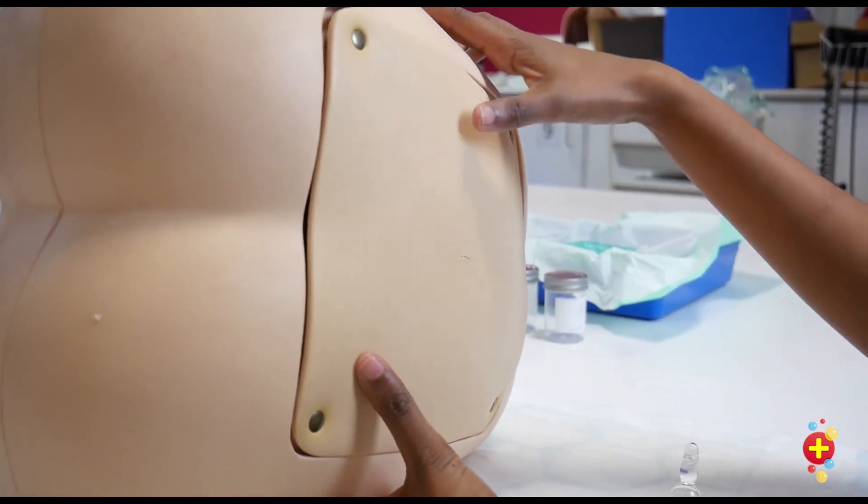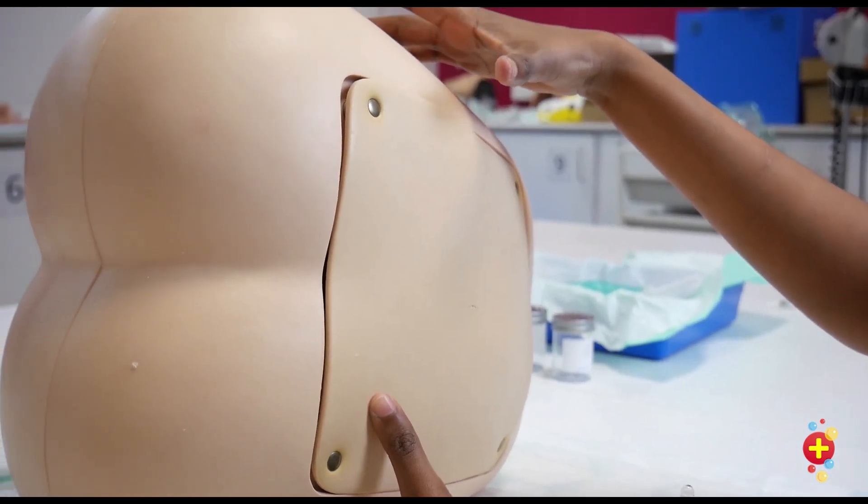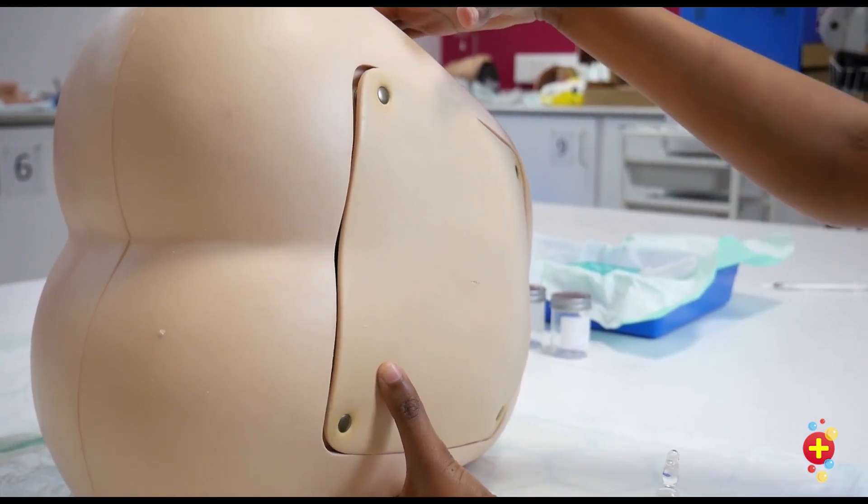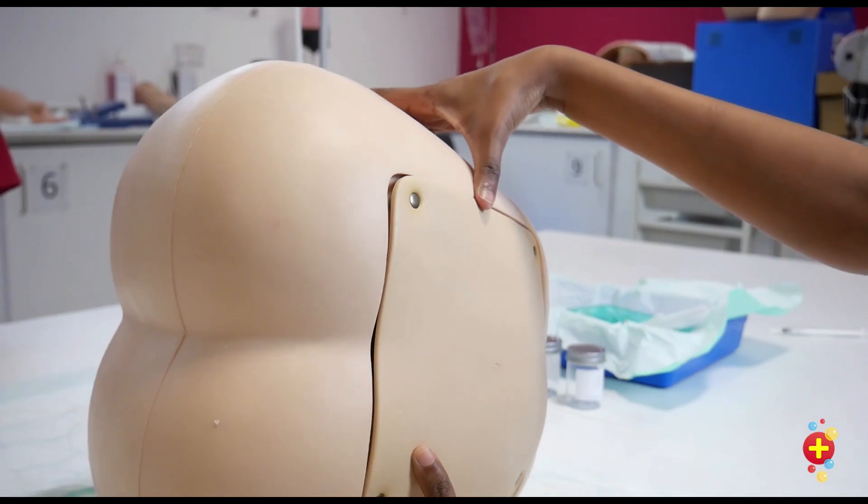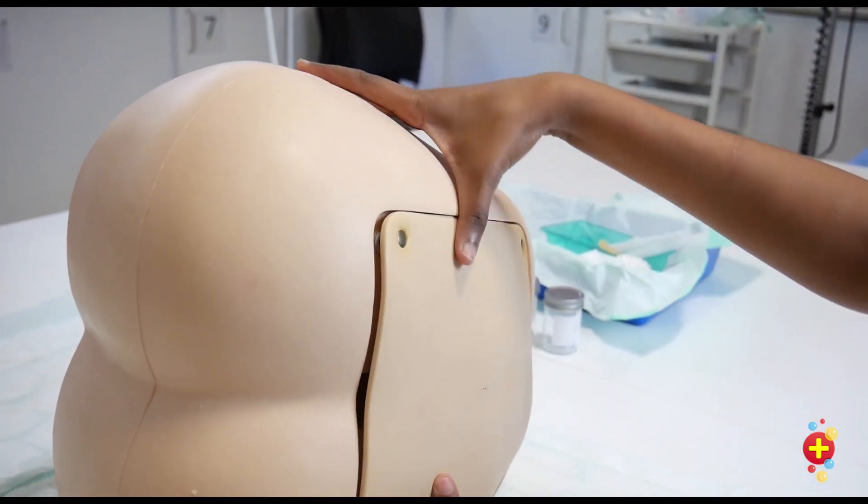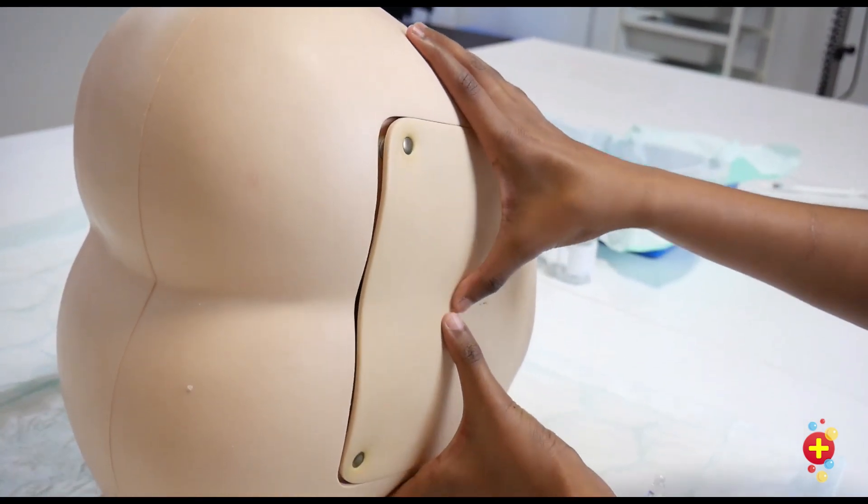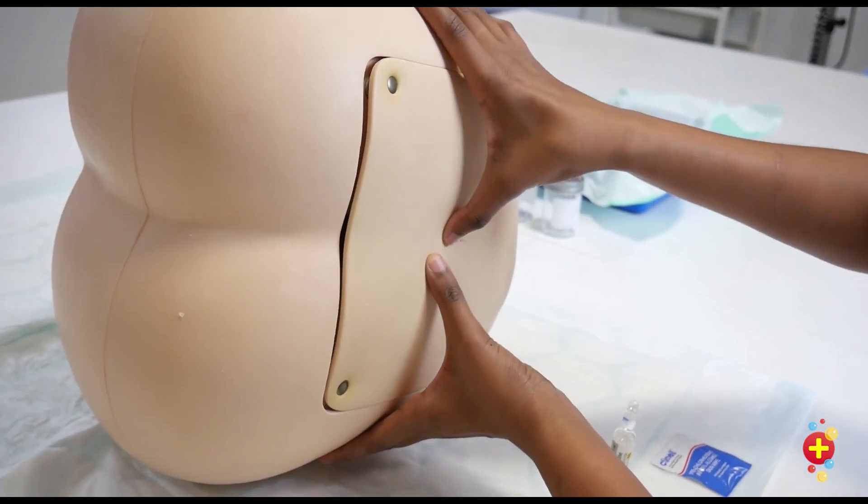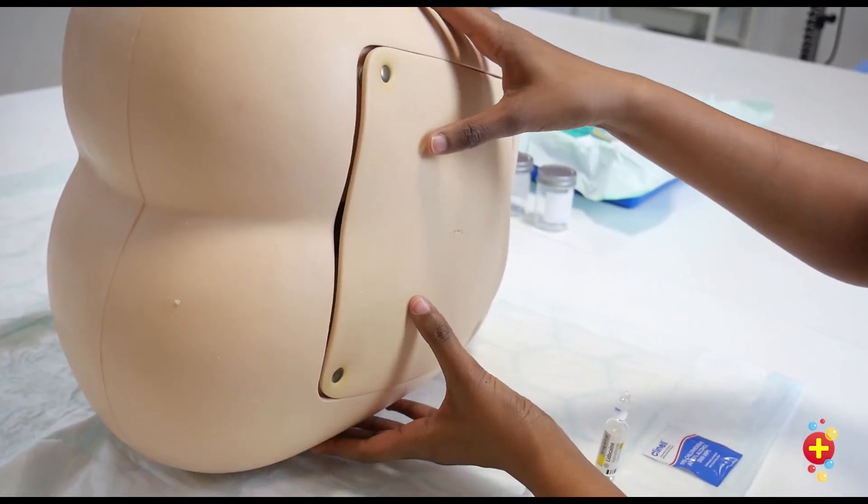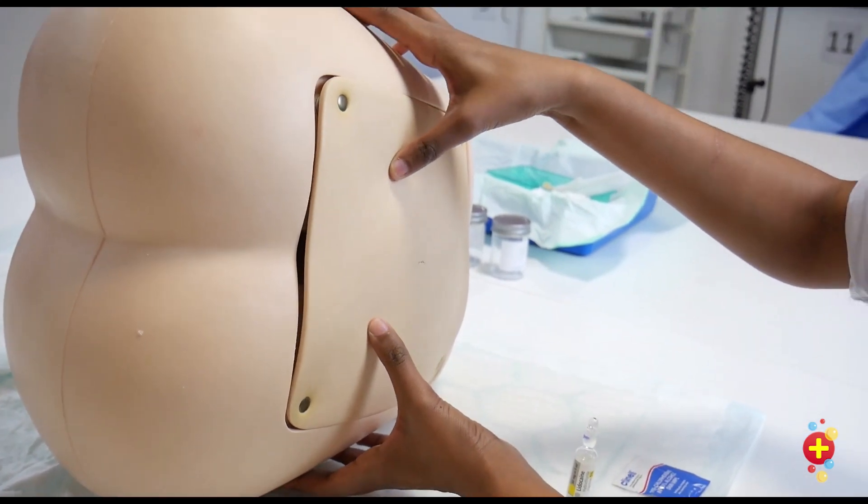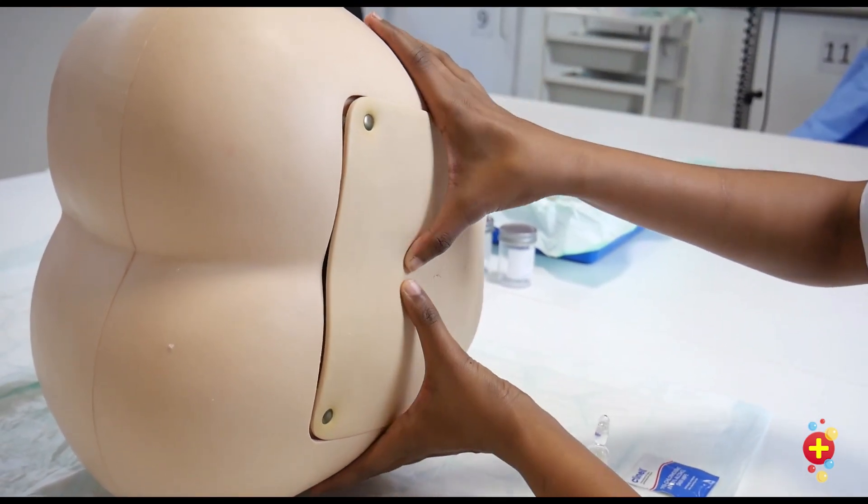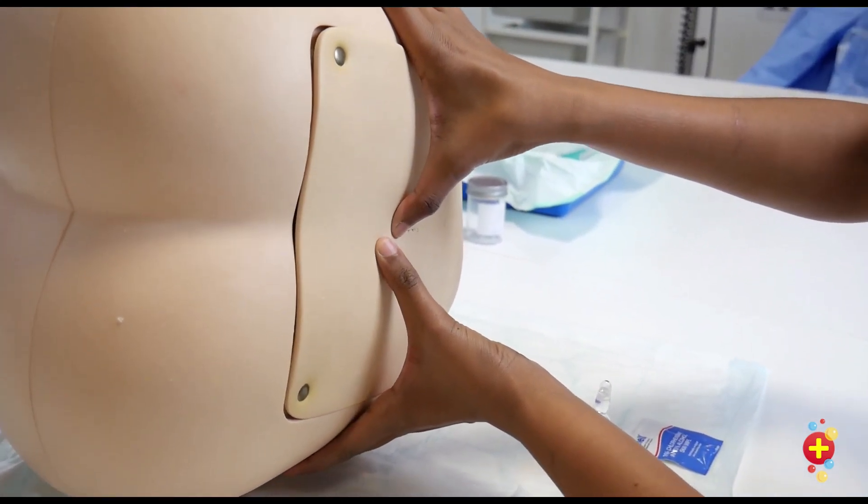When feeling the landmarks in a smaller child such as a neonate, you can feel from the anterior superior iliac spine across at the front, feel across to the spinous processes at the back to find your landmarks. In a larger child, you can feel the posterior superior iliac spines and feel to the midline to the spinous processes there.